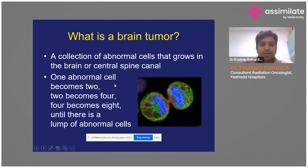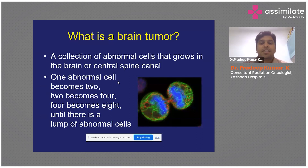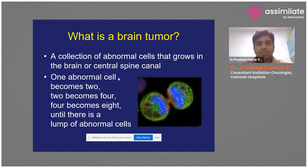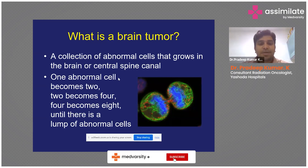Once it starts growing, there might be loss of checkpoints to stop its growth, or inhibitory or regulatory processes which stop this growth get disrupted. The tumor cells start growing — one, two, four, eight — they keep on dividing into a number of cells and become a lump, which is what we call a brain tumor.